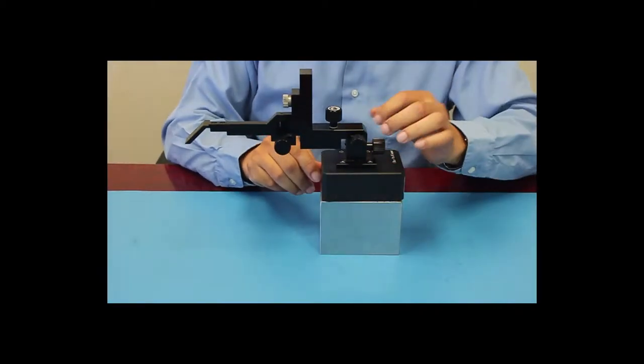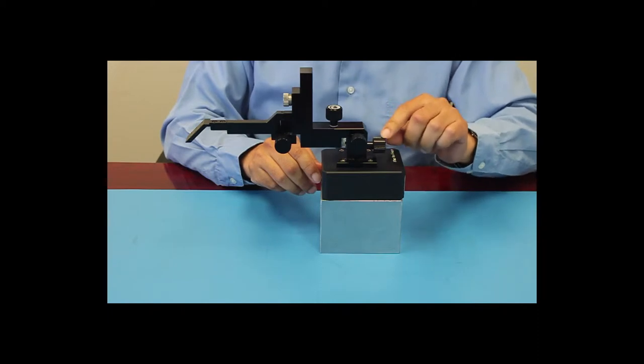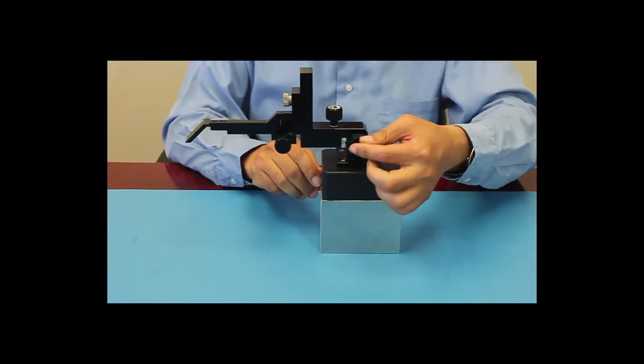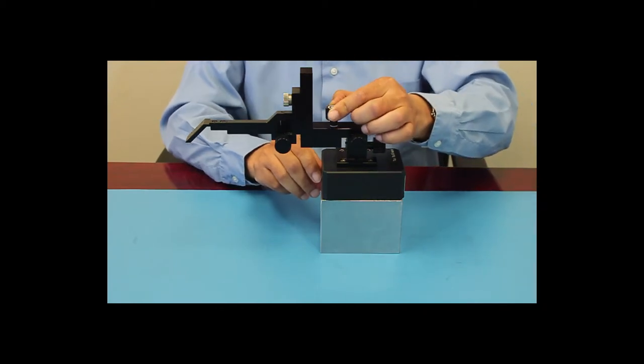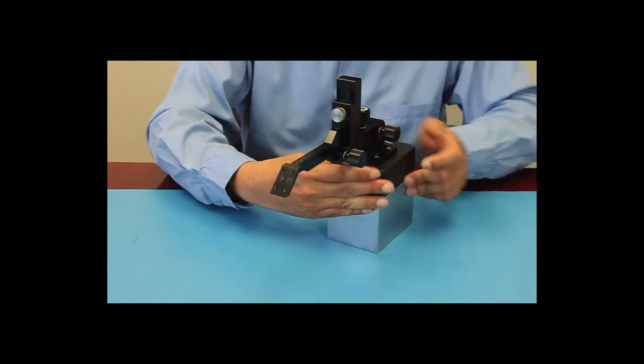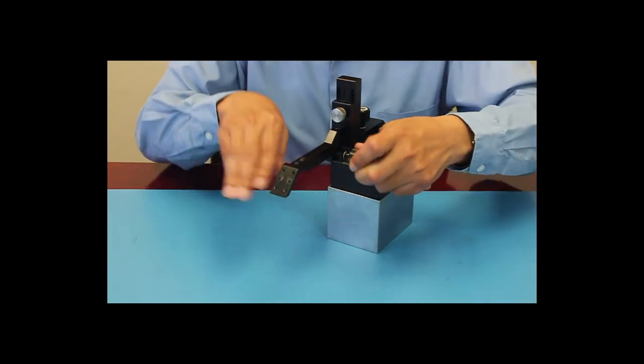This is the XYZ stage of the probe arm. X controls the front and backward movement, Y controls the left and right directions, and the Z screw allows up and down movement. Each stage can be moved 500 microns per turn. There's also a theta control on the side that maneuvers the lateral position of the probe tips.